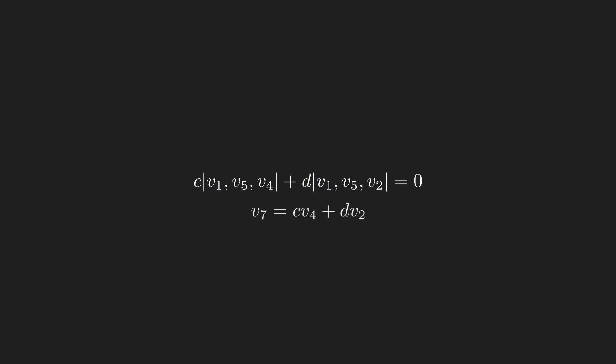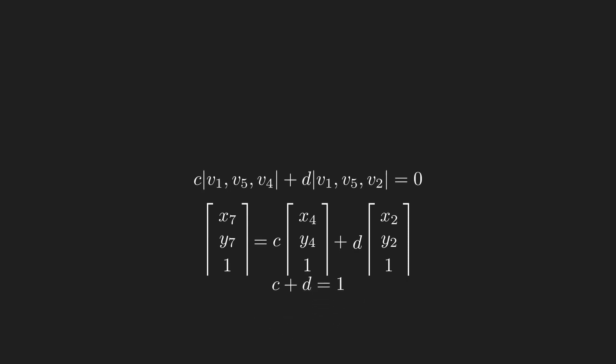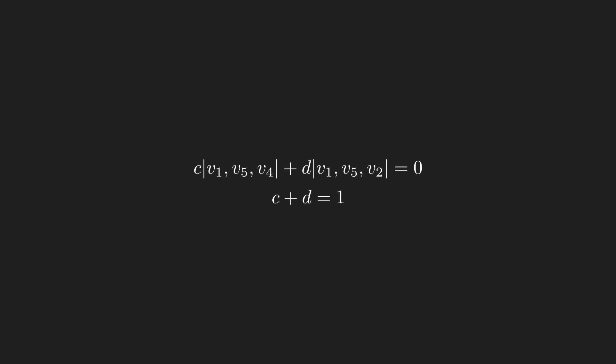However, from vector 7, its z component must equal 1, so I can get another equation. With these two equations, I can solve for C and D and simplify vector 7.